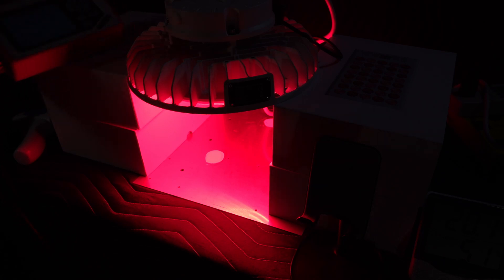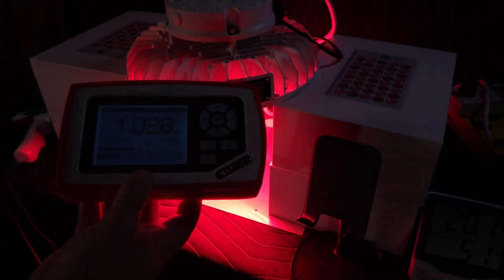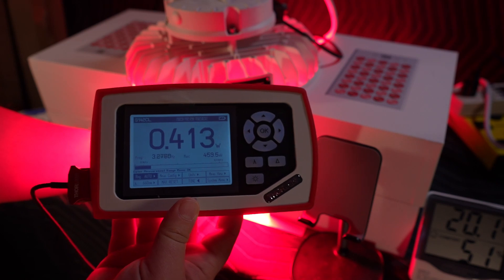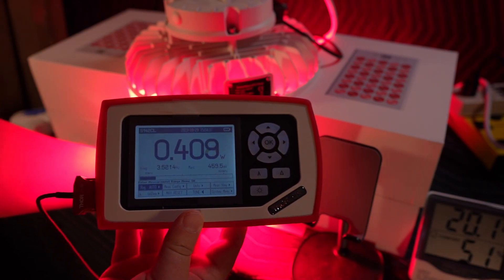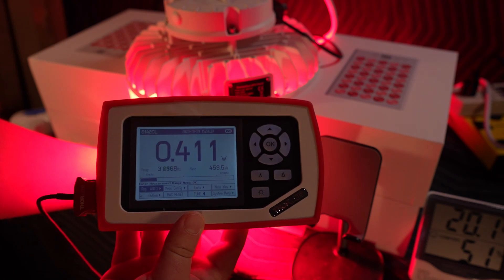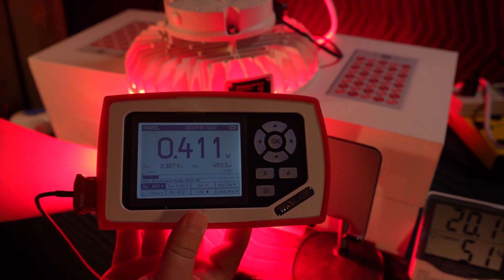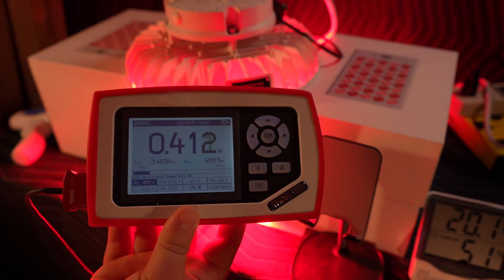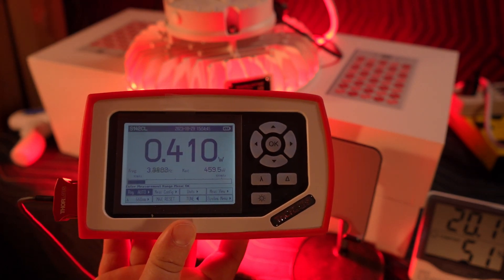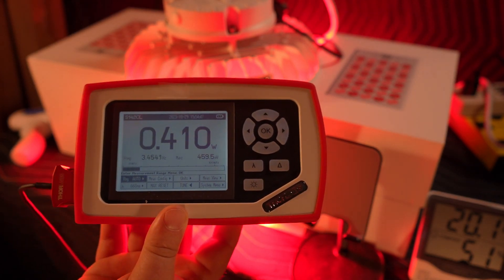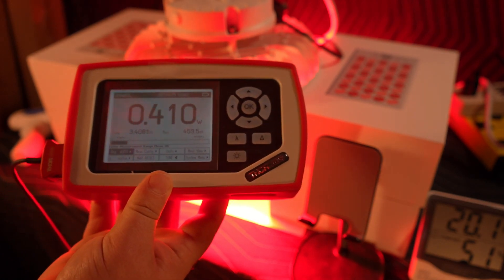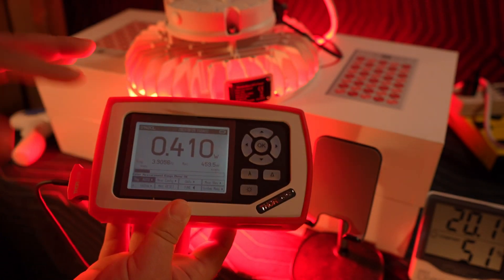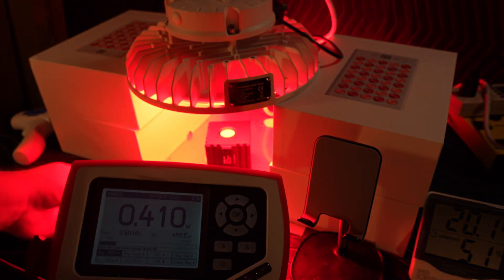Okay, so we're going to check the intensity again with the Thor Labs power meter. We'll put the sensor right underneath kind of the center point, see what we get kind of a max reading for, and we get up around 411. And if you remember, this is very similar power and intensity as the previous lamp that was 850. So this time it's going to be interesting because we're going to be testing very similar setup, same distance, same everything.